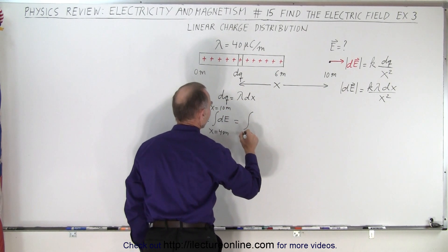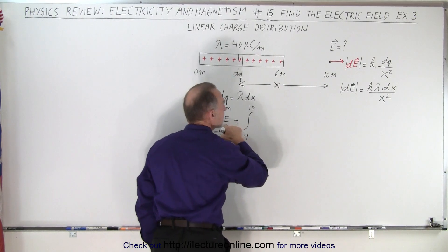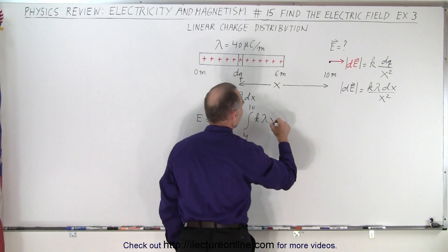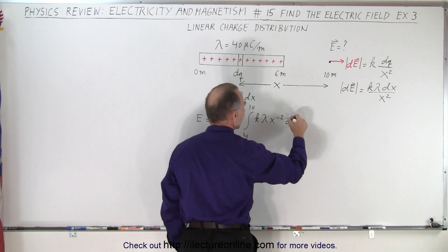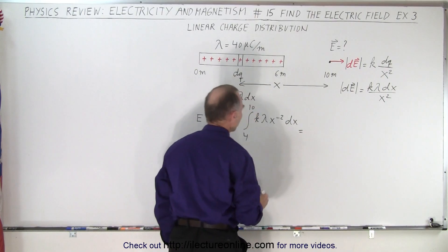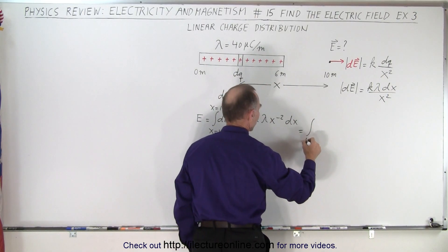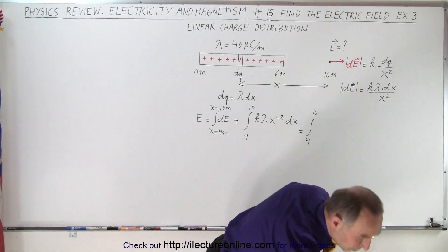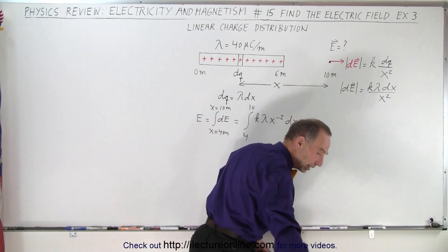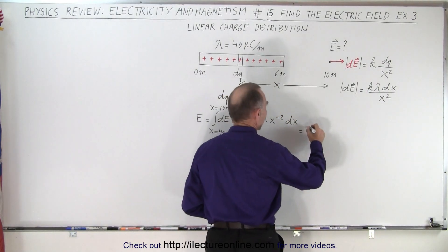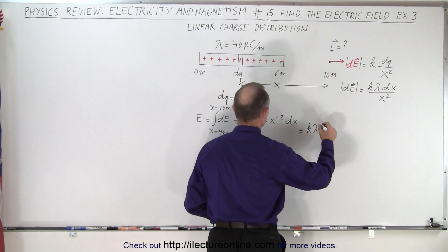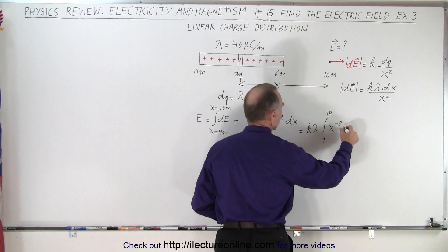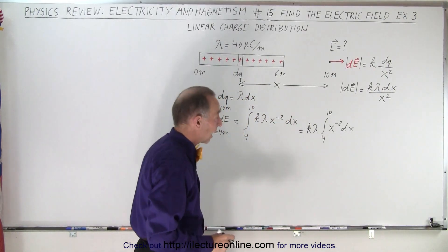And that is equal to the integral from 4 to 10 of dE, and dE is equal to k times the charge density times x to the minus 2. We'll bring it to the numerator times dx, which is going to be equal to the integral from 4 to 10. And actually what I'm going to do is I'm going to take these constants outside the integral, makes it a little bit cleaner, so we can write this as k times lambda times the integral from 4 to 10 of x to the minus 2 dx. So it simply becomes a matter of integrating that.